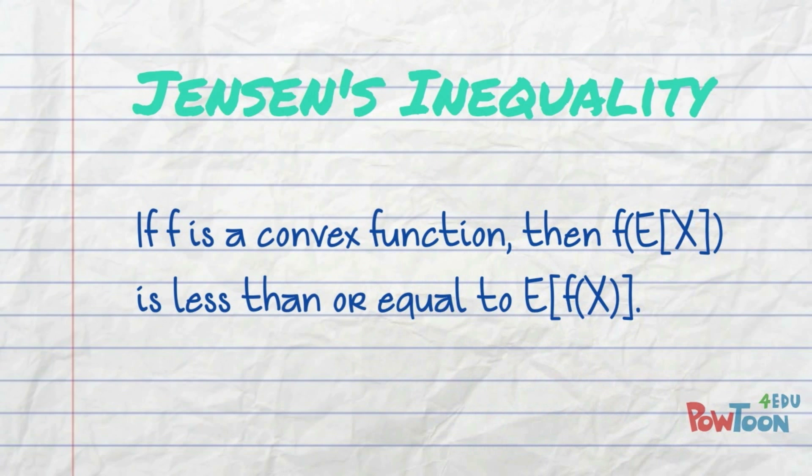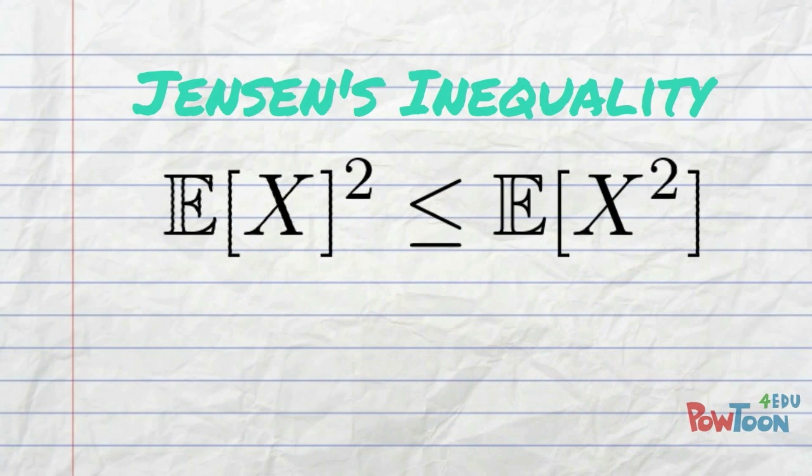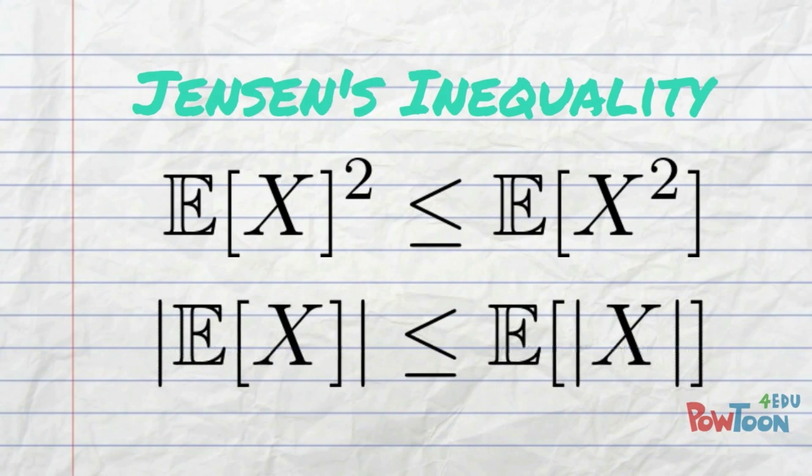In particular, the square of the expected value of x is less than or equal to the expected value of x squared. And the absolute value of the mean of x is less than or equal to the mean of the absolute value of x.